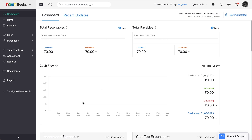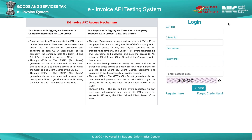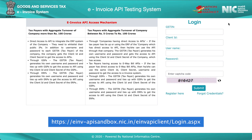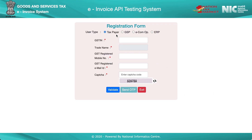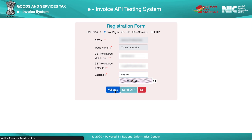Next, you'll have to register on the e-invoice sandbox system. To do this, go to the invoice sandbox login page by going to the following link. You can also find the same link in the description below. In this page, click register here. Choose user type as taxpayer and enter your GSTIN. The trade name will be automatically fetched based on your GSTIN. Enter your GST registered mobile number and the registered email address. Enter the captcha and click validate. Your e-invoicing sandbox account will be created and you can use the credentials to log in.